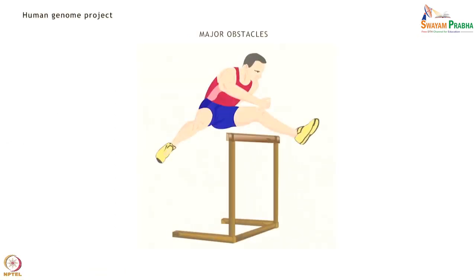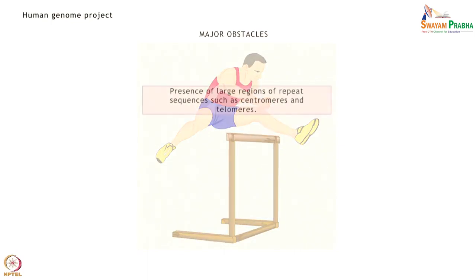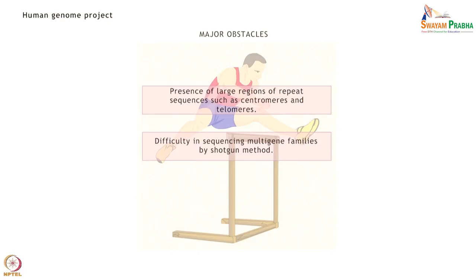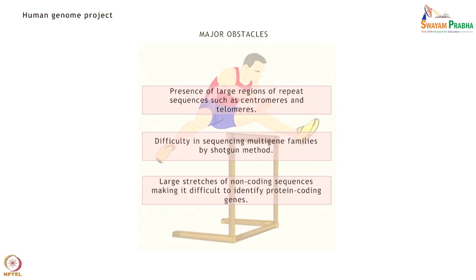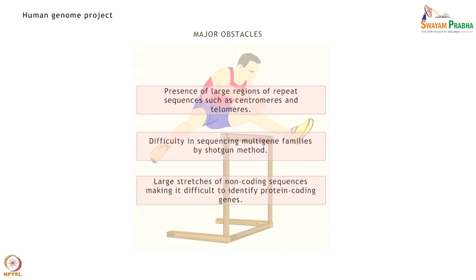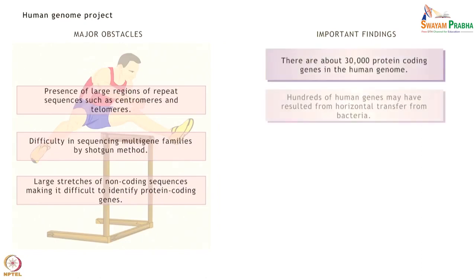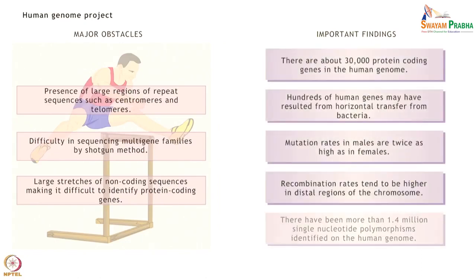Several hurdles were encountered during sequencing of the human genome, the largest being the presence of long stretches of repeating sequences. These repeat regions made it difficult to assemble the genome accurately, and the improved drafts published in 2003 covered 92% of the genome, with a large part of the remaining 8% being due to repeat sequences. Nevertheless, these genome sequencing studies successfully provided many findings about the human genome.